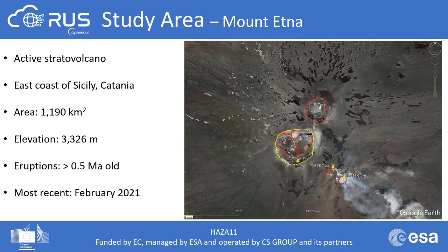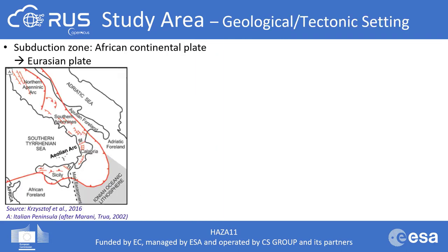Currently Etna's height is 3,326 meters, and its eruptions are of multiple patterns — they can be flank eruptions or occur at the summit, which has five distinct craters. Volcanic activity first started taking place about half a million years ago. There has been an increase in eruptive events recorded in recent years, and the most recent summit eruptions started in February 2021. The city of Catania has been affected mainly by volcanic ash that covered most of the area. Mount Etna lies above the convergent plate margin between the African plate and the Eurasian plate.